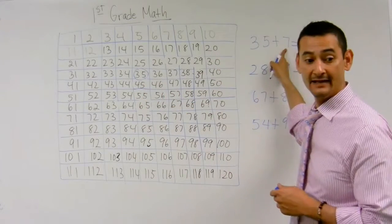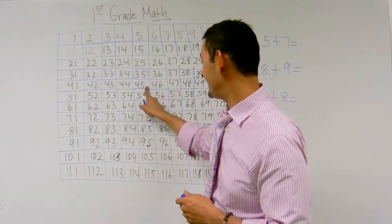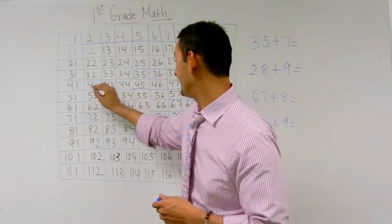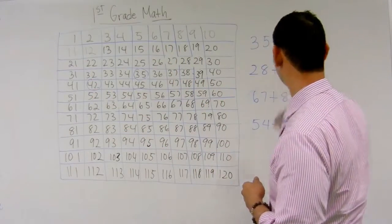Plus 7, I know that 7 is 3 less than 10. So I'm going to move back 3, 1, 2, 3. So the answer is 42, awesome.